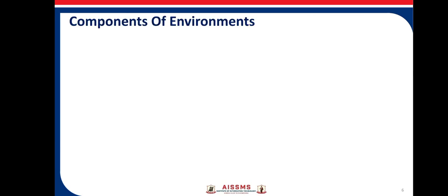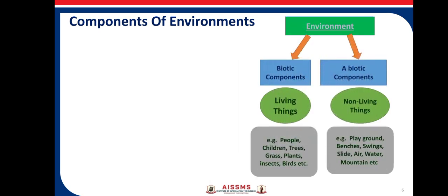What are the different components of environment? There are two components of environment: biotic components and abiotic components. All living things come under the biotic component, and all non-living things come under the abiotic components.